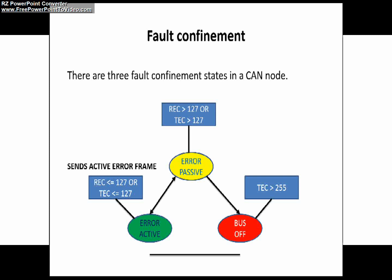The second state of a CAN node is Error Passive. Suppose the transmit and receive error counter values are greater than 127 — as you can see in this slide — the CAN node will be in Error Passive State. An Error Passive unit must not send an active error frame; it is not allowed to send active error frames over the CAN network when it detects an error in a frame. Instead, it will send a passive error frame over the network.